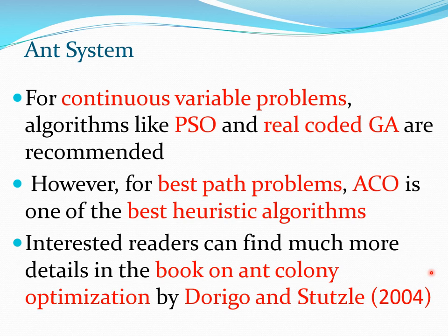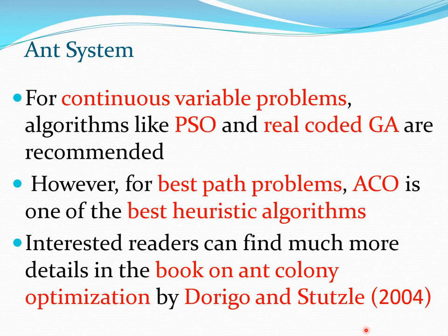As a rule of thumb: if you have continuous variable problems, algorithms like PSO and real-coded GA would probably work better. However, if you have problems involving best-path calculations, ACO is one of the best heuristic methods to use. For more information, there is a book by Dorigo and Stützle which provides great detail on this method, and many resources are also available on the web.